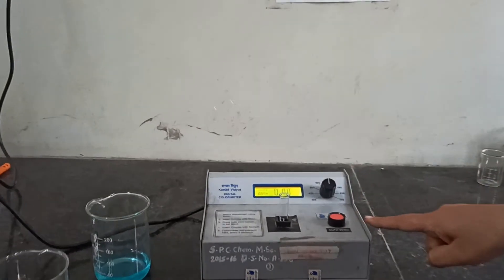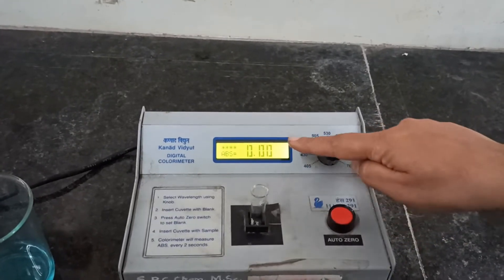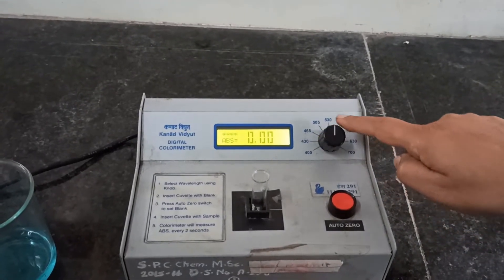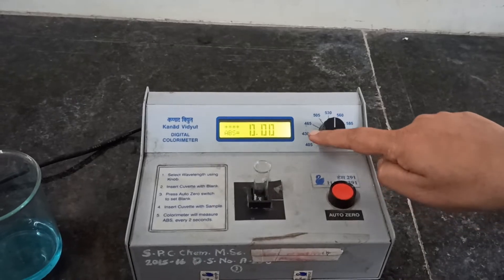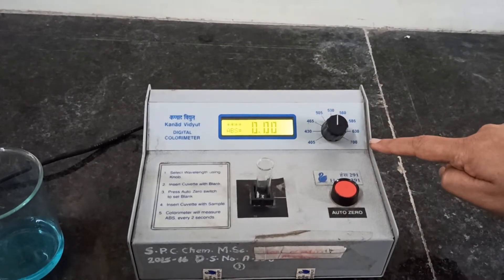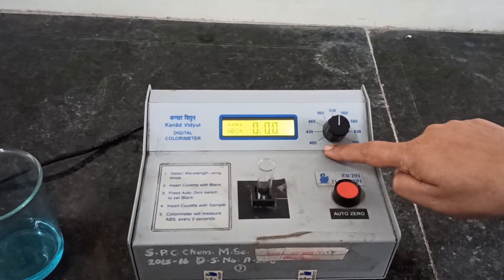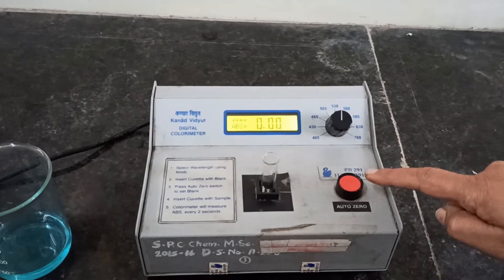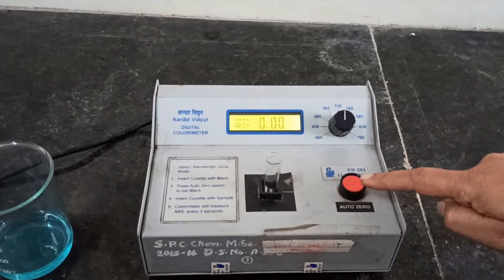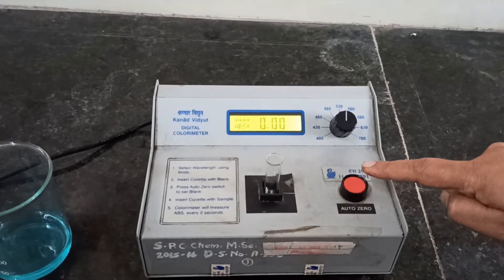Now we will look at the instrument. This is a digital display which will give me absorbance. This knob will show me how many inbuilt filters are there with wavelengths from 405 to 700 nanometers.